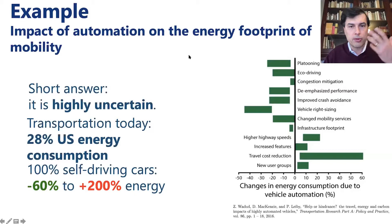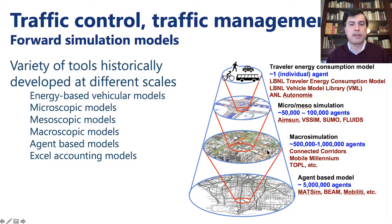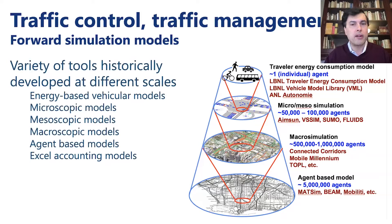In the domain of transportation modeling, there are many different scales at which you can model the system, appropriate for different uses. Agent-based models can operate at very large scales. Microsimulations are helpful at the scale of a city. When I started my career, microsimulations could only handle a few intersections. Nowadays you can use them for corridors and beyond, and it could be that in a decade you could use them for a full city.